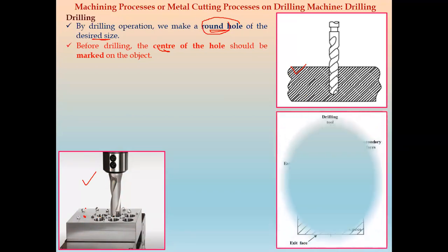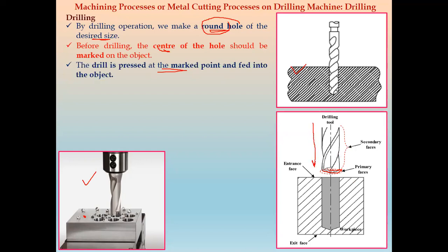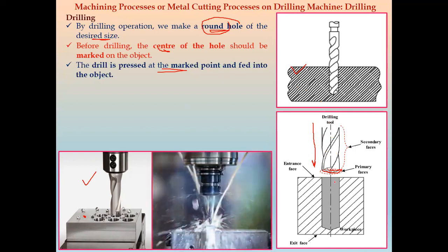The drilling machine consists of the workpiece, with an entrance face and exit face. The drilling tool has primary cutting edges and secondary cutting edges. The drill is pressed at the marked point and fed into the object. The drill tool is rotating and fed against the stationary workpiece. A coolant is also provided during the drilling operation.